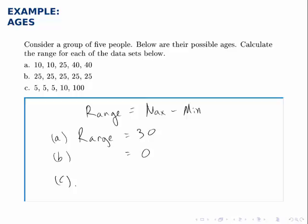For the third data set, the lowest number is 5, the highest number is 100, so the range is the difference between them, or 95.